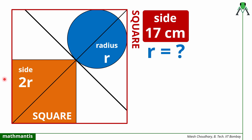Hello everyone, welcome back to my channel Mathematics. In this video we are going to discuss an interesting geometry problem. There is a red square given to us whose side is 17 cm. The diagonal of this square is defined here, and inside this square there is an orange square whose one vertex is common with the red square. This is the orange square and its side is defined as 2r.